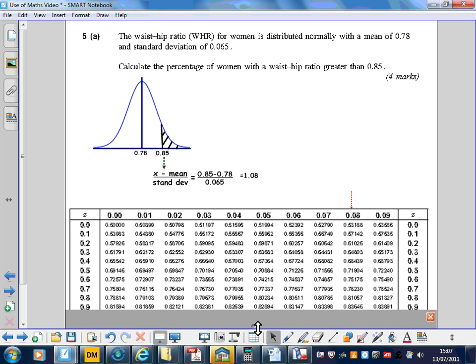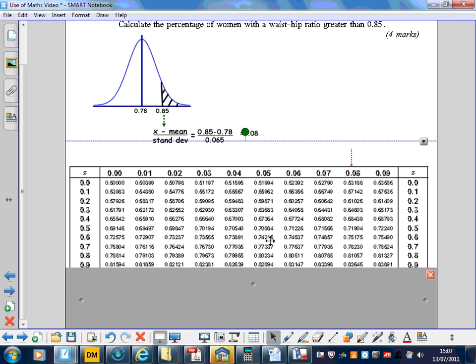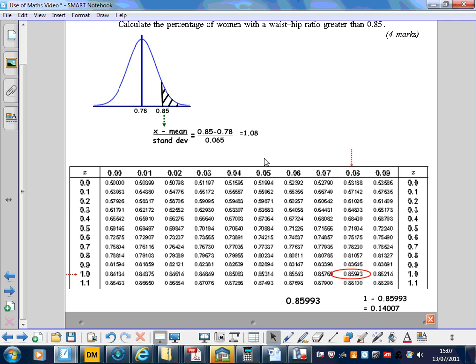So just flipping down, have a look at those. OK, 1.08 is the value that we're looking for, so the first whole number and the first decimal place you locate here on the very left-hand column of the table, and the 8 is over here. And we just look at where the row and the column coincides, and that gives us 0.85993.